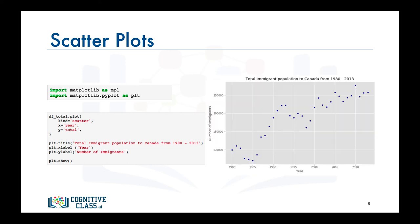And there you have it, a scatter plot that shows total immigration to Canada from countries all over the world from 1980 to 2013. The scatter plot clearly depicts an overall rising trend of immigration with time.